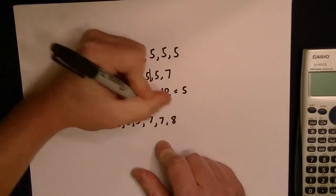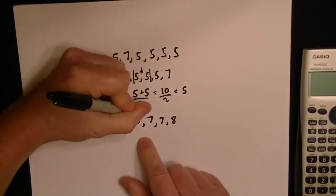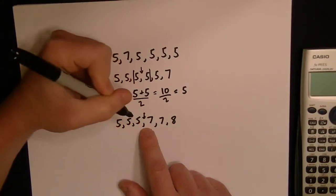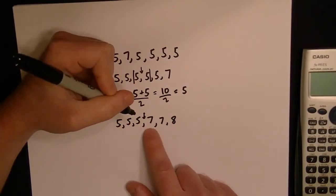Well, again, because you've got 3 and 3, you don't really have a middle number. So you have to take the average of the two middle numbers.